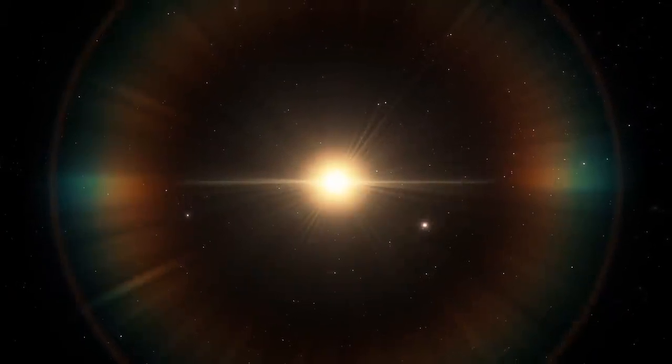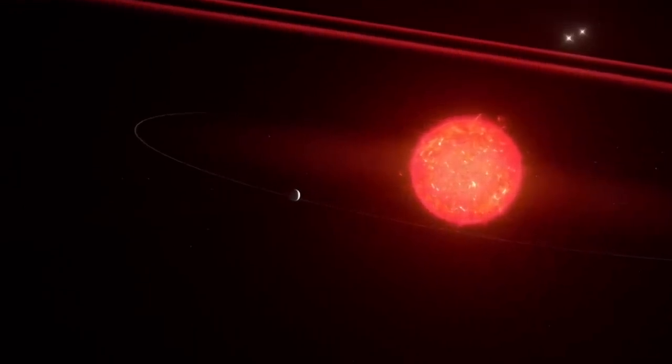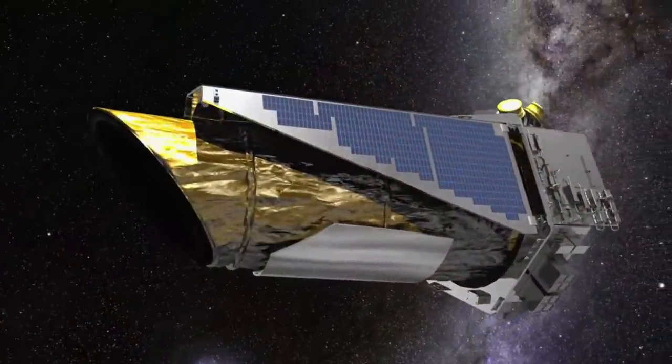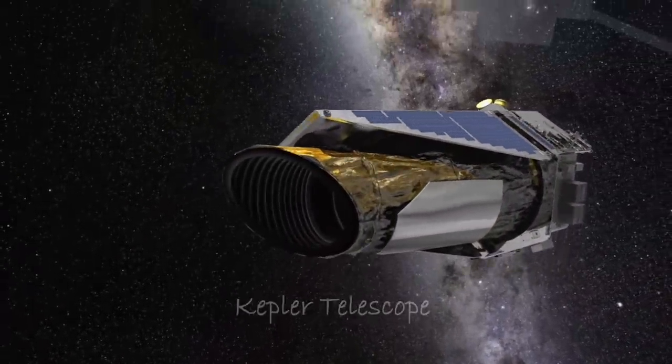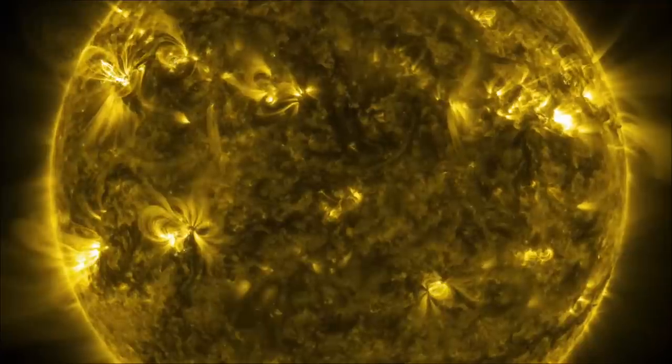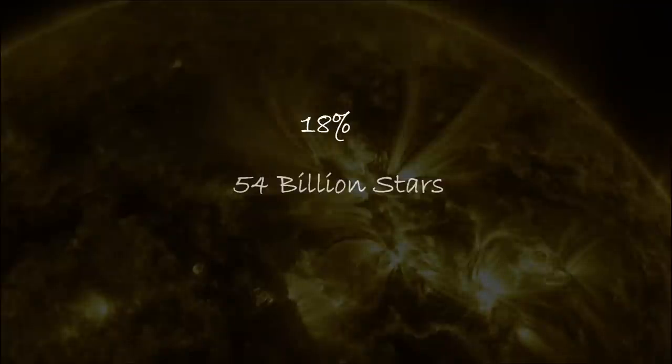Then we look at the fraction of sun-like stars. The assumption that red stars are unsuitable for hosting habitable planets is likely a conservative assumption. Today we have a pretty good understanding of this thanks to space observatories like NASA's Kepler. The number of sun-like stars is approximately 18% which corresponds to 54 billion stars.